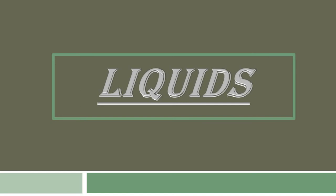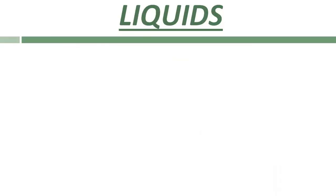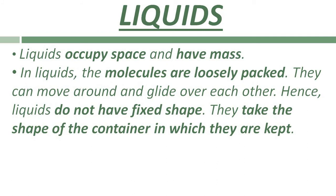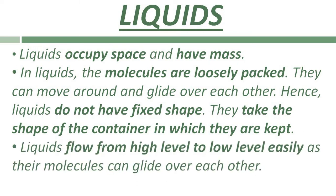Another state of matter is liquid. The properties of liquids are: liquids also occupy space and have mass. In liquids, molecules are loosely packed — there is some space between the molecules of liquids. Thus, molecules can move around and glide over each other in the space available. Hence, liquids do not have a fixed shape. They take the shape of the container in which they are kept. Unlike solids, liquids can flow.